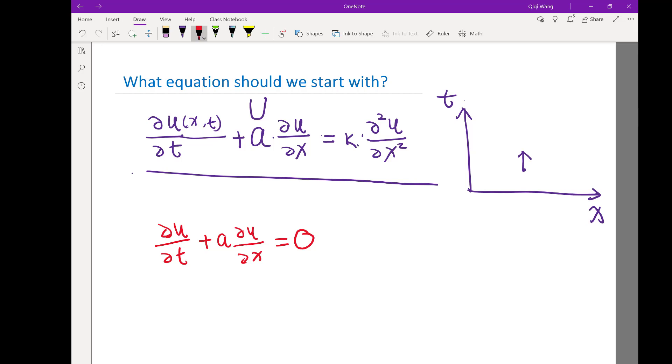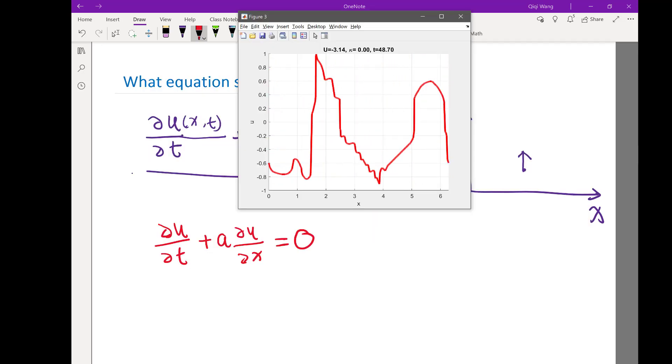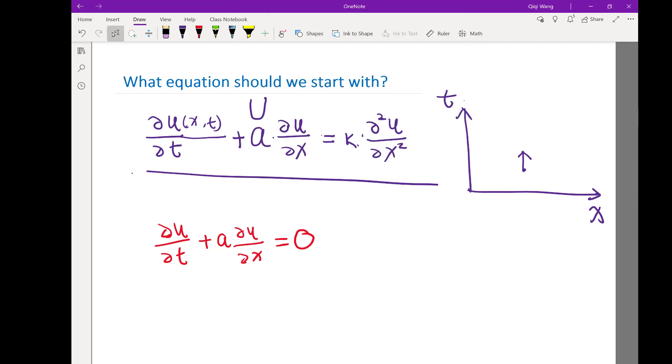That's correct, so let's track this maximum value. As the value—the maximum value—seems to be moving towards the left. For the case when a equals negative π, the maximum value seems to be going towards the left.